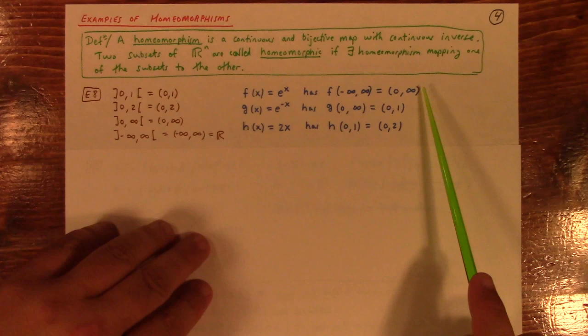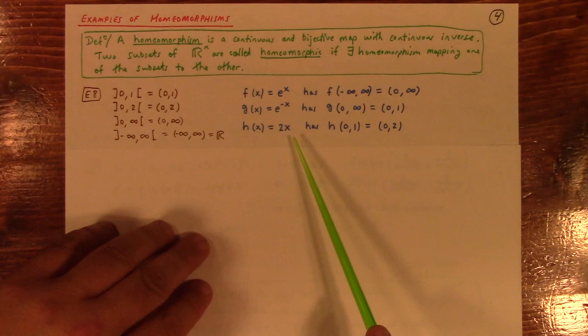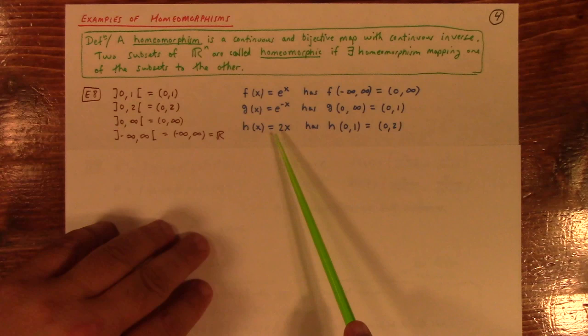If you're not comfortable with this notation yet, we'll talk about it more in a future lecture. I'm just going to not focus too much on the nuances of this notation just yet. h of x equal to 2x, that takes you from this set to that set. So, h is the homeomorphism from 0, 1 to 0, 2.